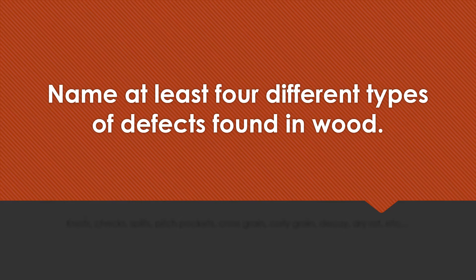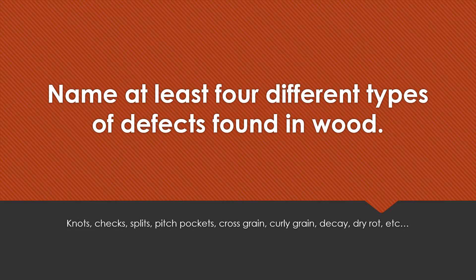Name at least four different types of defects found in wood. Knots, checks, splits, pitch pockets, cross grain, curly grain, decay, dry rot, and many others.